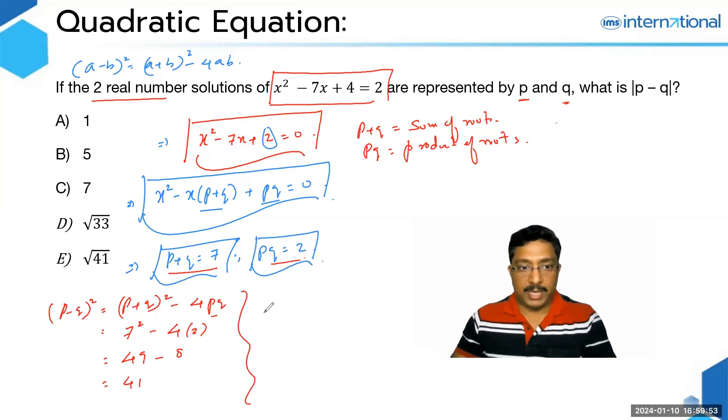And you all know that this is (P - Q)². But the concept you need to apply here—see, before I teach you the concept, you need to understand that the question is not asking you P - Q, but |P - Q|. What we obtained over here is (P - Q)² = 41.